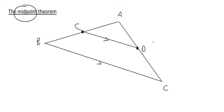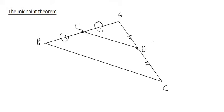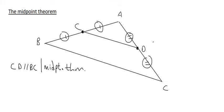So remember, it's called the midpoint theorem, so to use it you need the two midpoints. How would we do this mathematically in a test? If we're told that this length equals that length, and this length equals that length — note these don't have to be equal to each other, but as long as each pair of halves match — then we would write: CD is parallel to BC, reason: midpoint theorem. Furthermore, CD is equal to one half of BC, reason: midpoint theorem. You can abbreviate 'midpoint' with a dot so you don't have to write the whole word.